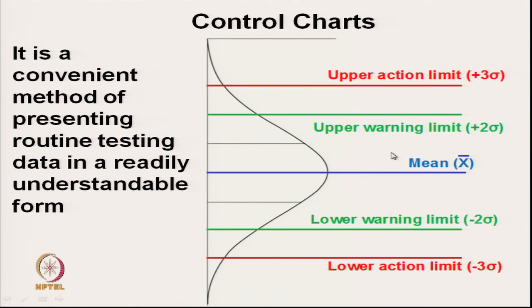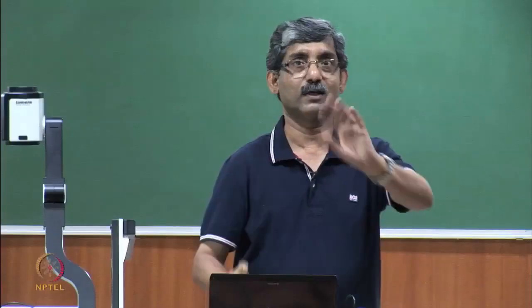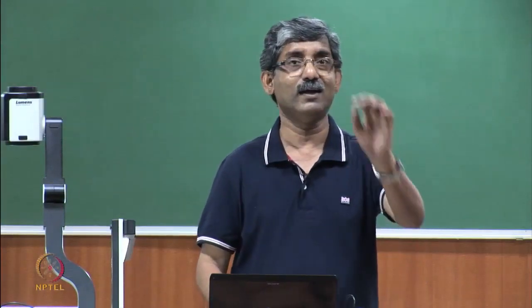Warning limit means we do not have to take immediate action. For example, if we are producing 30s count yarn with sigma of 0.5, plus minus 2 sigma means the allowable count range is 29 to 31. If a value crosses the action limit (plus minus 3 sigma), you have to take immediate action. If it goes once in 1000 times it may be by chance, but if the value repeats then you must immediately take action.